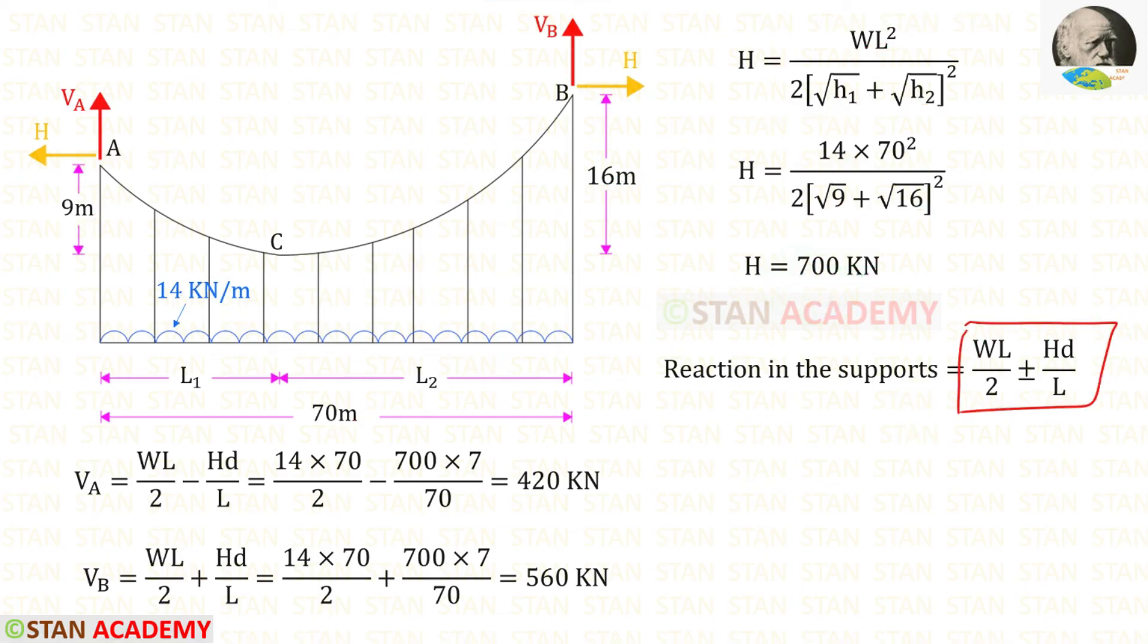This is the formula to find the reactions in the supports. To find Va we have to take the negative sign because A is in the lowest level compared to B. And to find Vb we have to use the positive sign. D is the difference in the level. So D is equal to 16 minus 9. We will get 7. For Va we will get 420 and for Vb we will get 560.